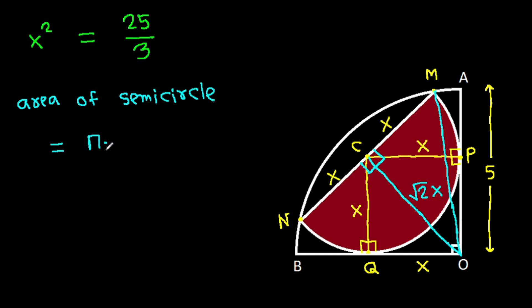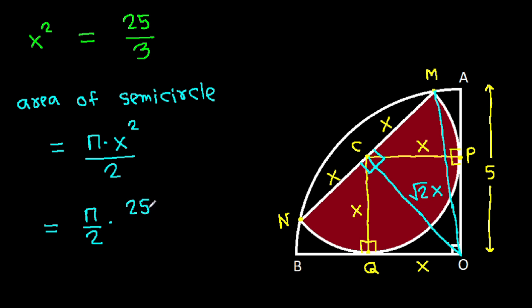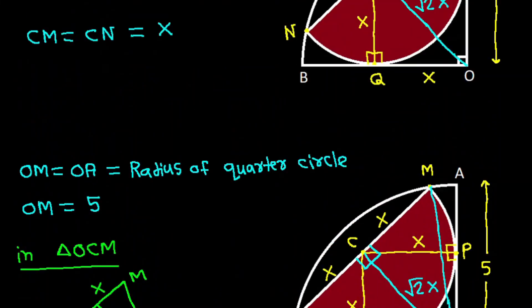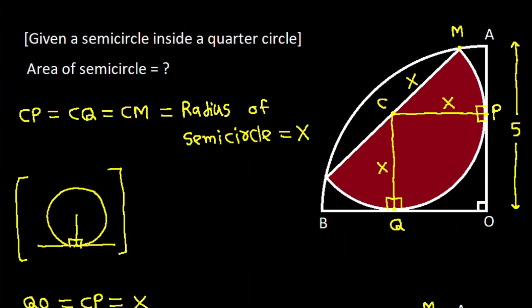The area of the semicircle = π × X² / 2 = (π/2) × (25/3) = 25π/6. So the area of the semicircle is 25π/6.